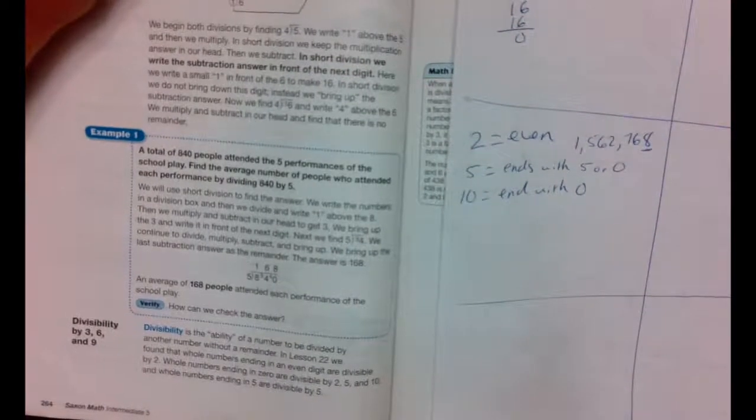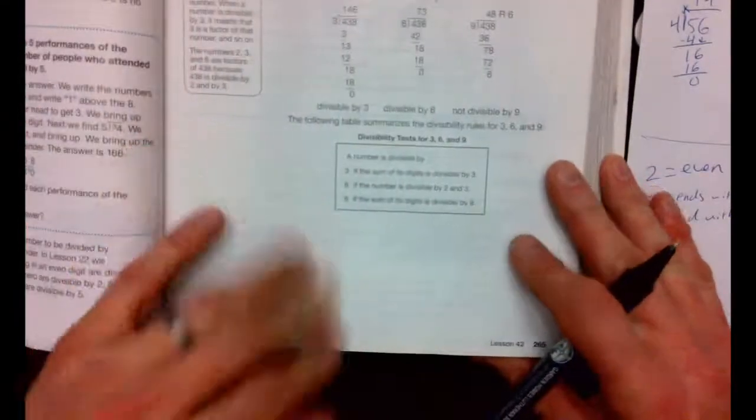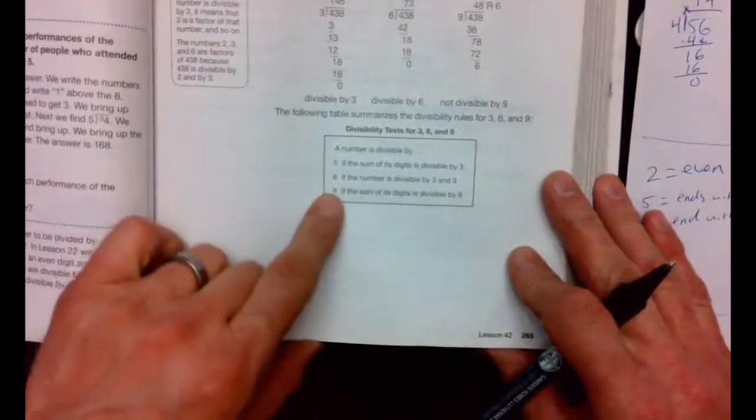The third one we learned was a divisibility rule of 10. 10 has to end with a 0 to be divisible by 10. 10, 20, 30, 40, 50, 60, 70, 80, 90, 100. Now, today we want to move on. And we want to study divisibility rules of 3, 6, and 9.